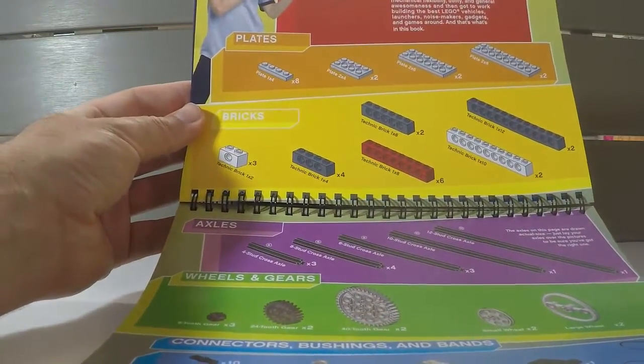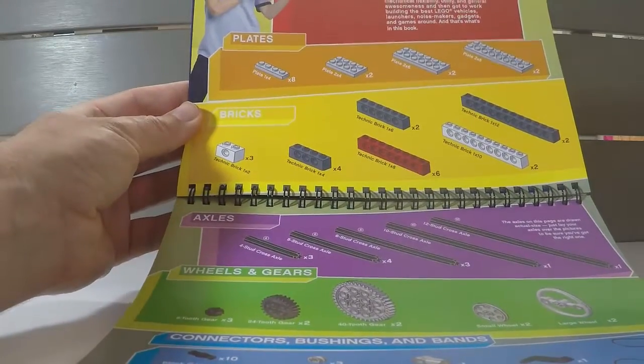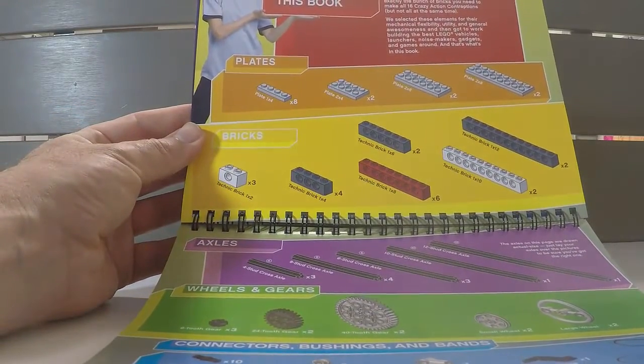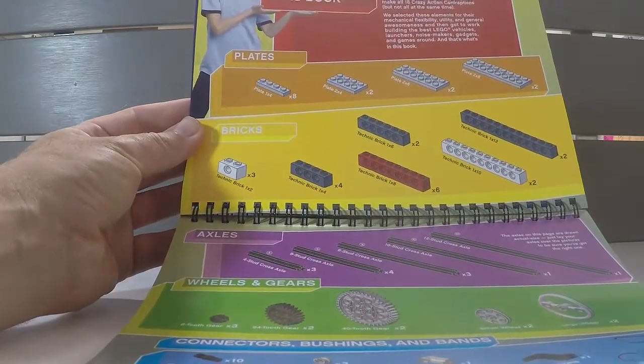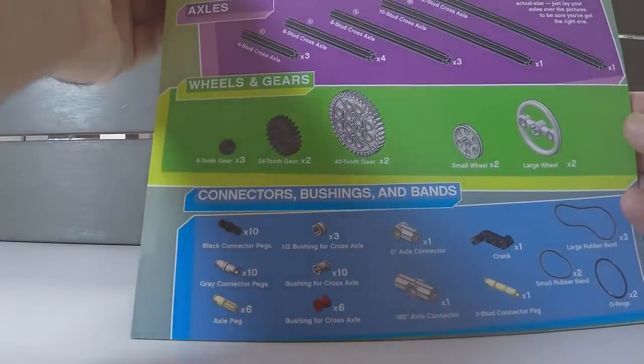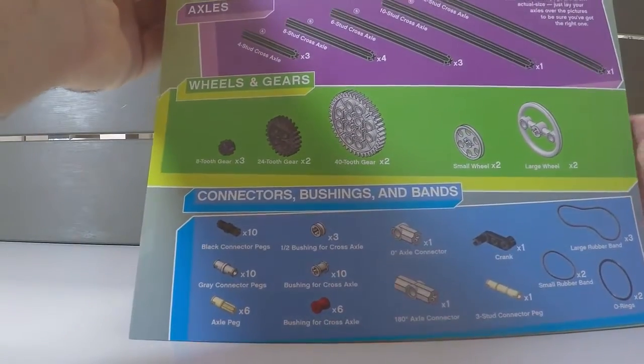For the people that are new to Lego, it actually goes through the process of explaining what's in the actual kit. So the plates, the bricks, the axles, the wheels and the gears, the connectors and the bushings and bands.